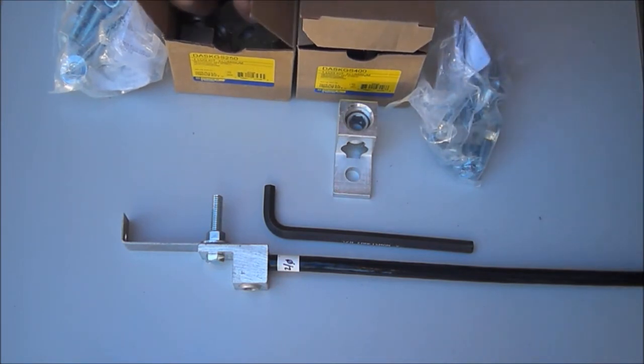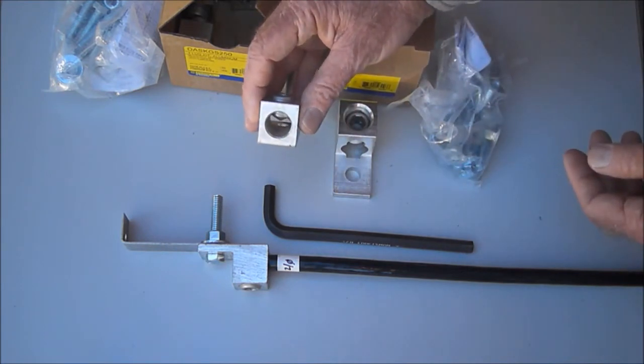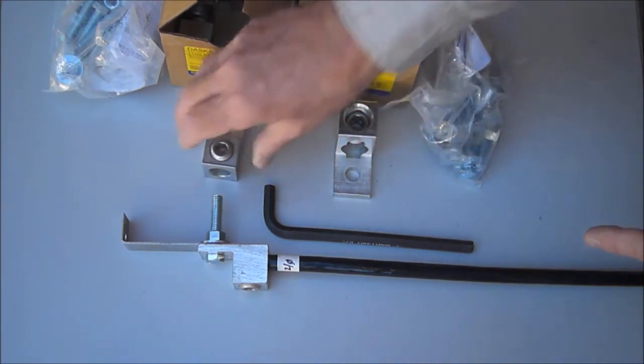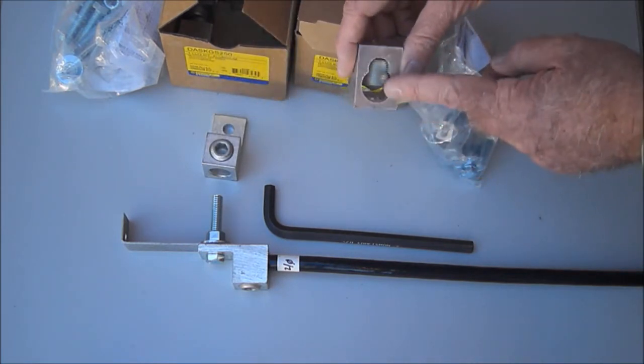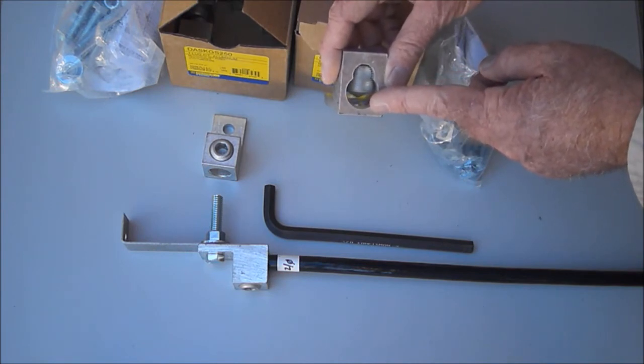Now, the lugs included in the DASKGS-250 kit have a round opening that will accept a number 6 to 350 kcmil conductor. The lugs included in the DASKGS-400 kit have a capacity of 1 number 4 through 600 kcmil conductor or,